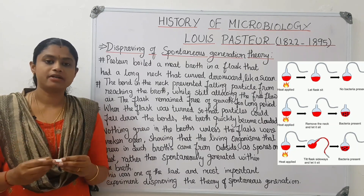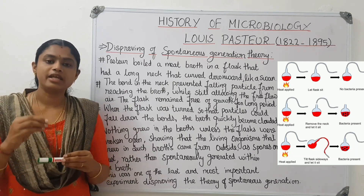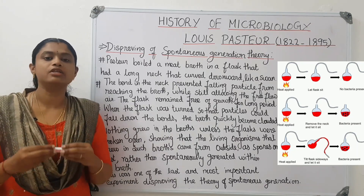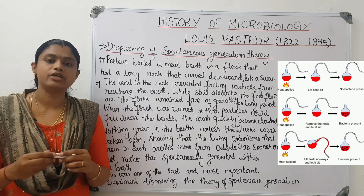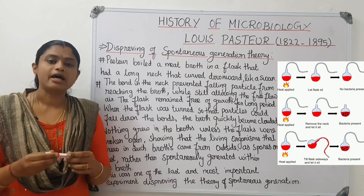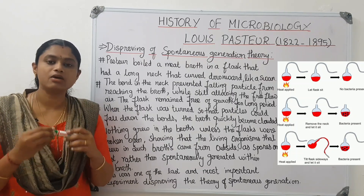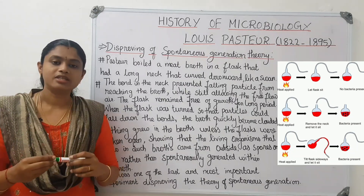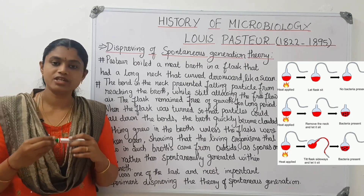In the third process, it was done with a curved neck flask, and with the tip of the neck flask. After the second and third process, a microorganism was concluded to be present. The conclusion was that airborne microorganisms caused contamination. This is one of the most important experiments in disproving the Spontaneous Generation Theory.